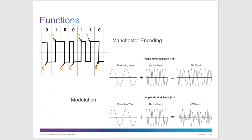With Manchester encoding, you get a zero or a one based on voltage transitions. A transition from low to high, crossing the baseline, gives you a one. A transition from high to low gives you a zero. That's how zeros and ones are generated. Modulating waves modulate a certain frequency — a little longer or shorter — to create ones and zeros.